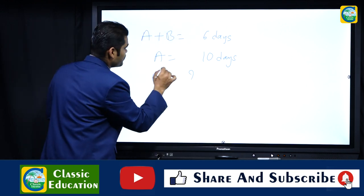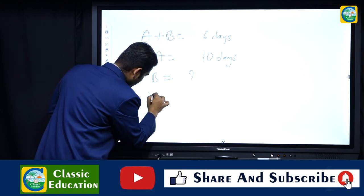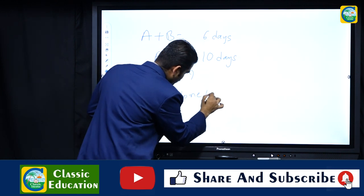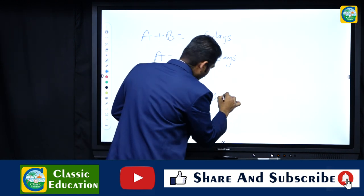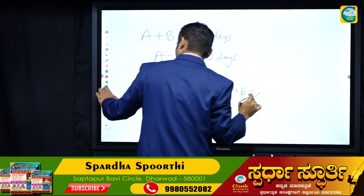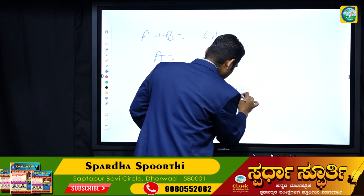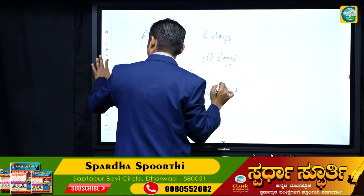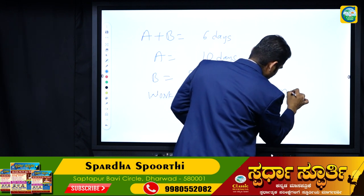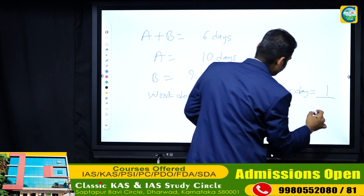Work done by A and B in one day equals 1 by 6. Work done by A in one day equals 1 by 10.